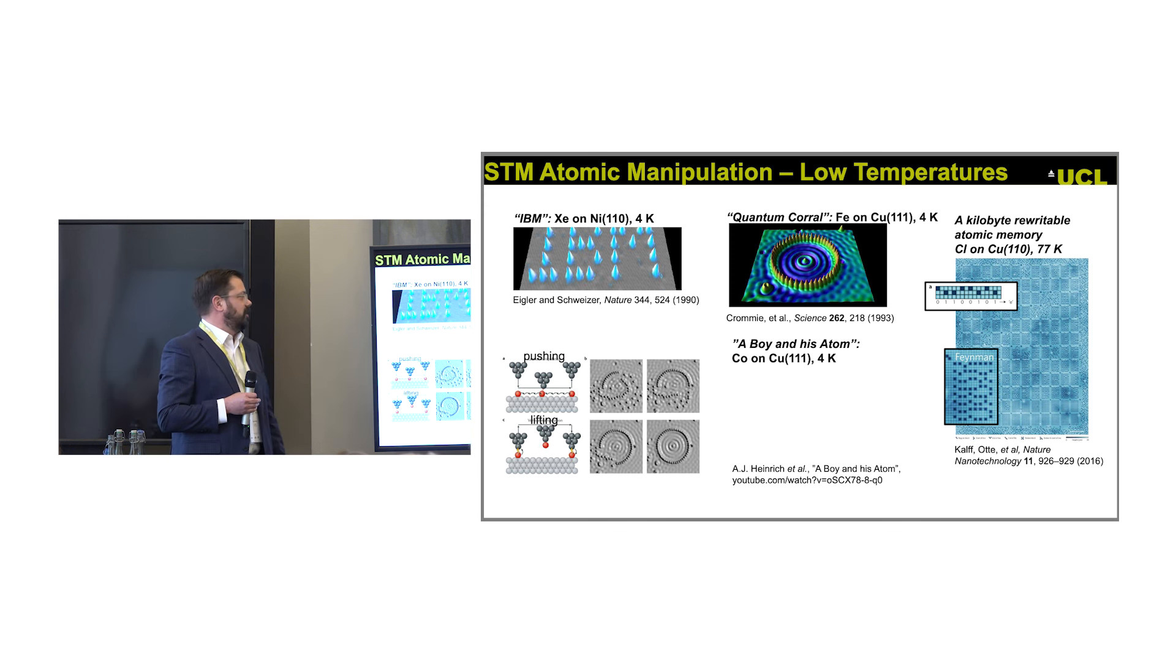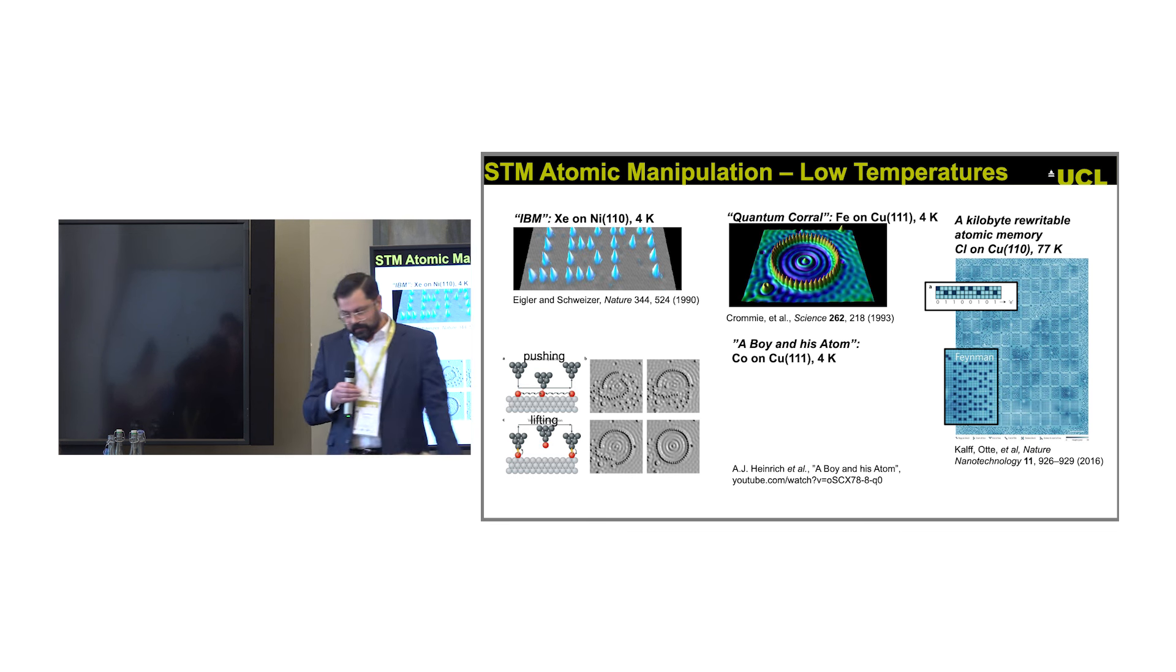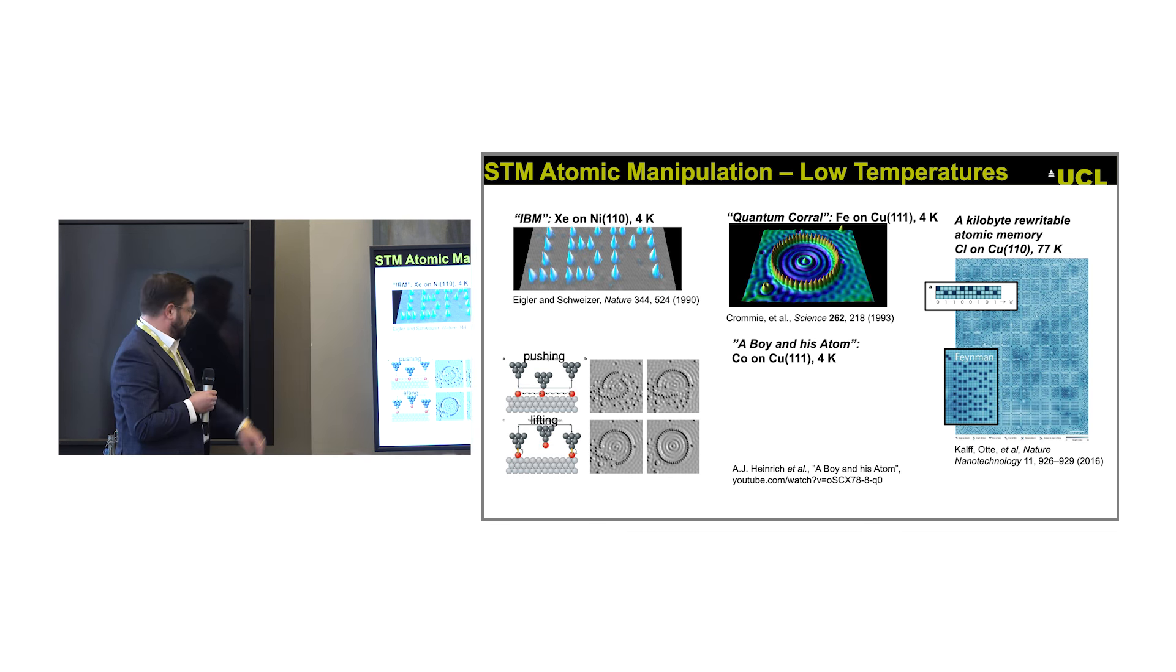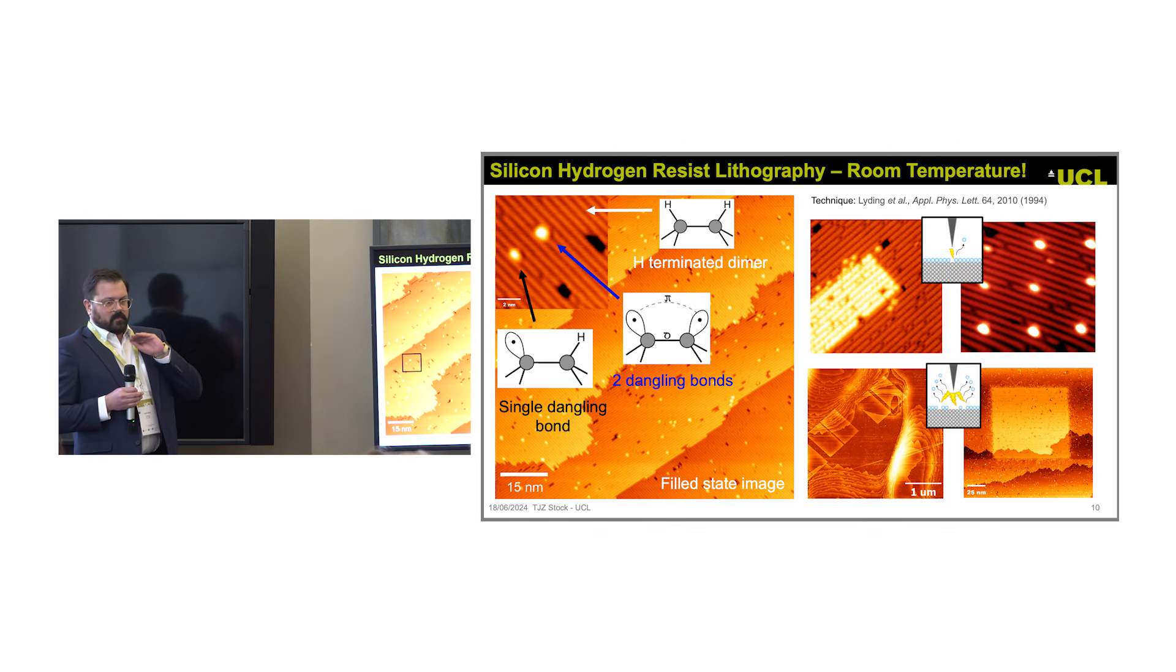But these are all just toy systems in the lab demonstrating that you can move it around. More recently, there's a more sophisticated build of memory. Here's a rewrite of atomic kilobyte on a surface of copper written in individual atom vacancies. But even this is at 77 Kelvin and only exists in ultra-high vacuum.